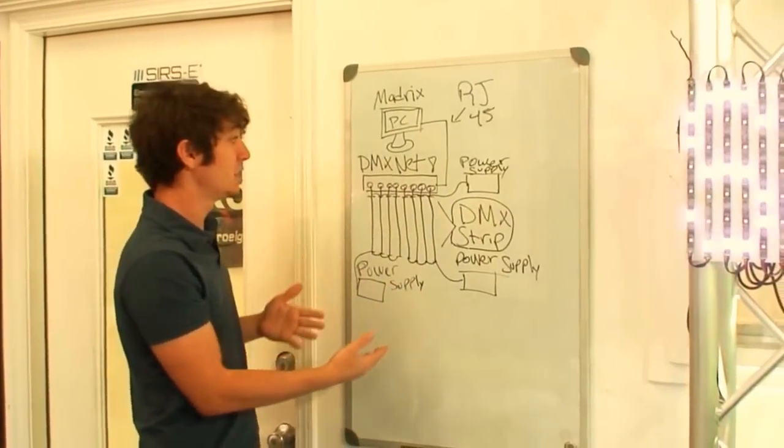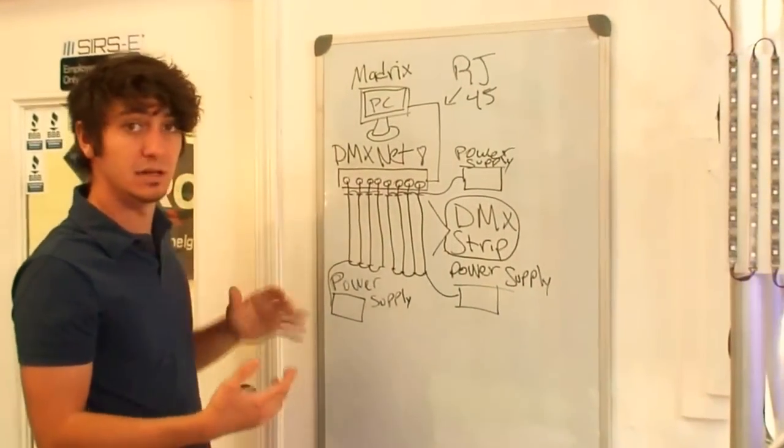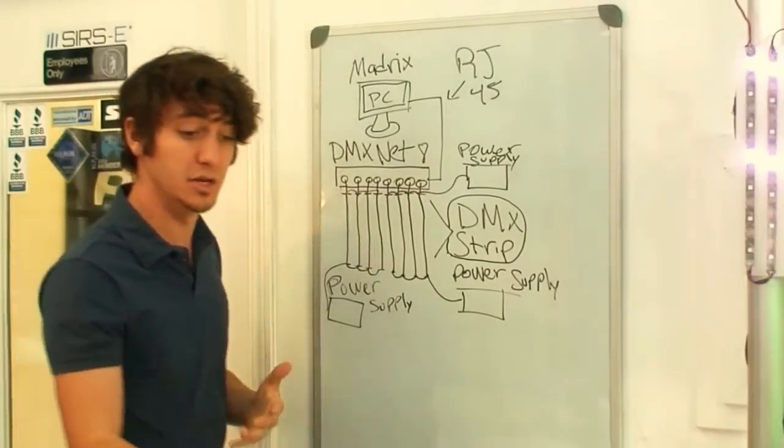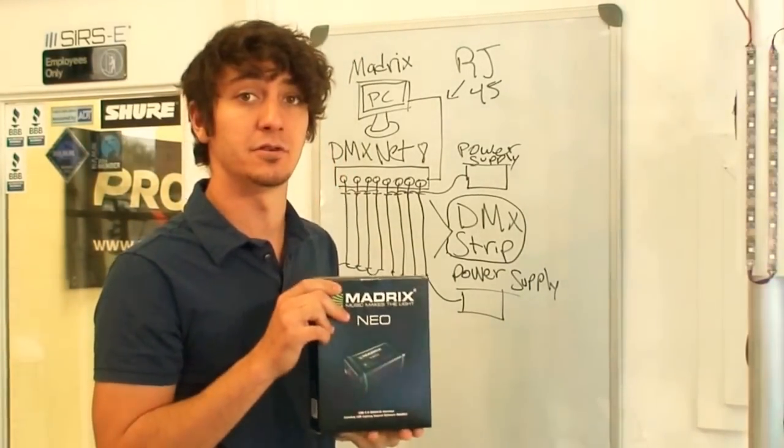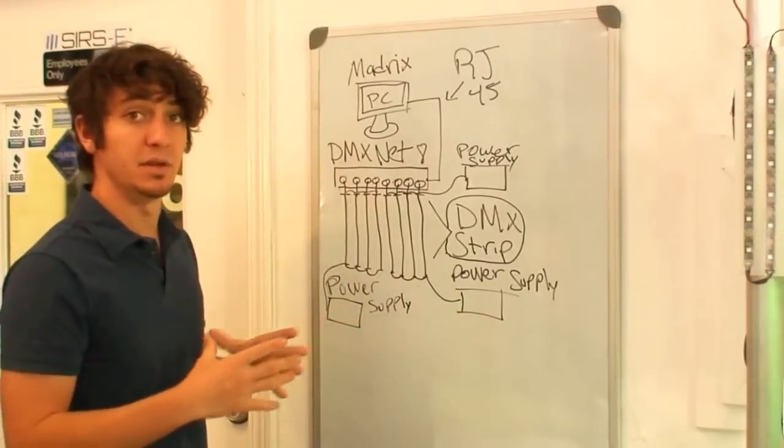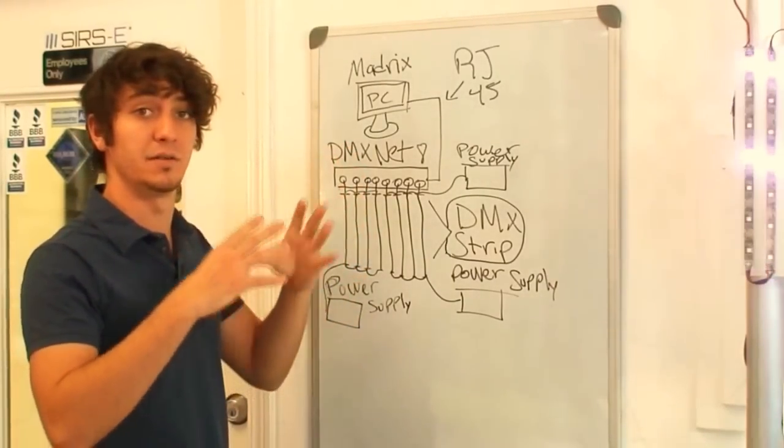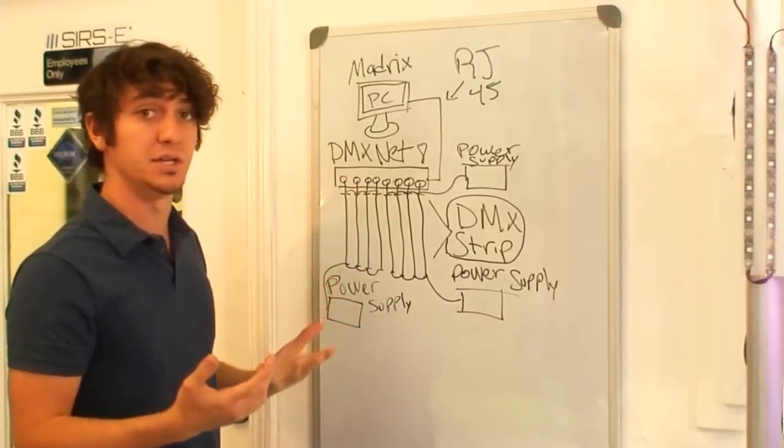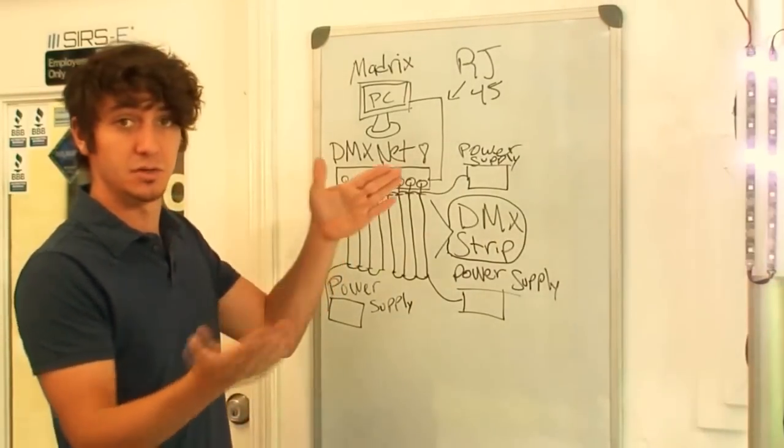And the first thing you are going to need is a larger Madrix license. With the Neo, this one you can only do 512 channels. If you are going to do a bigger scale setup, maybe like a 16 by 15 screen or whatever size you are going to do. Bigger than a single strip.